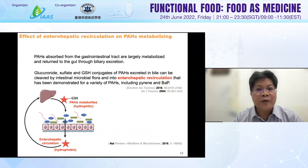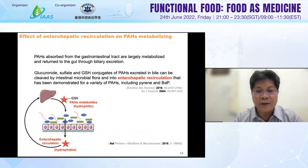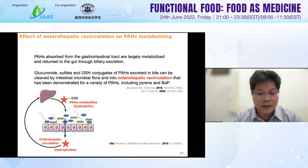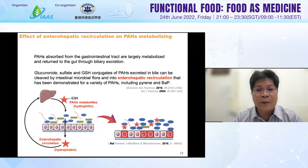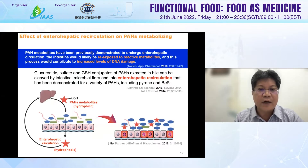PAH can also be metabolized by the GI microbiota. After conjugation by the liver, the addicts or metabolites continue to attack intestinal cells through enterohepatic circulation, causing dysbiosis and DNA mutation. This shows the pathway and how it ultimately causes DNA mutation. PAH metabolites have been shown to undergo enterohepatic circulation, causing intestinal reactive epoxide metabolites that increase DNA damage levels.